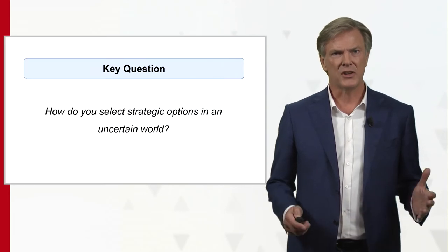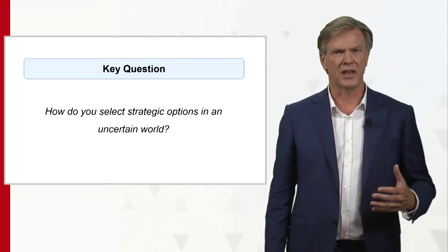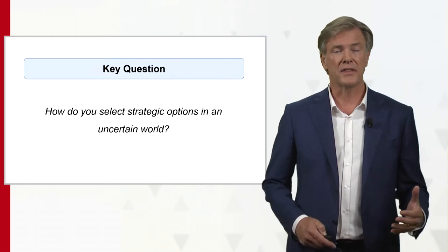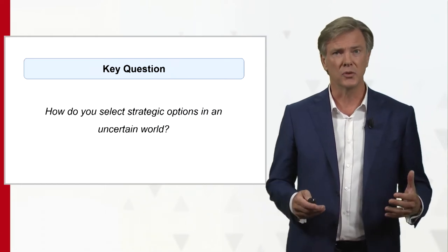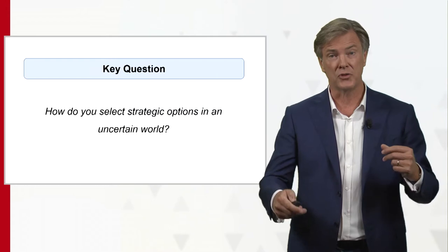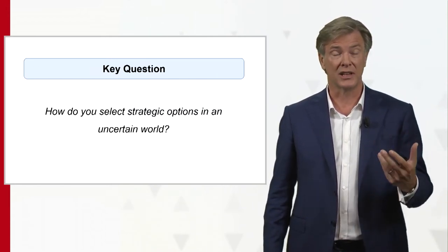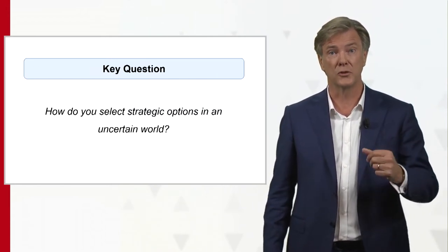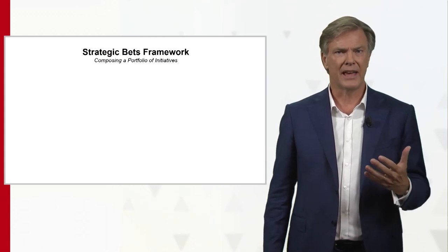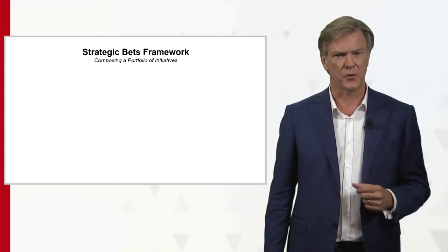The key question is: how do you select strategic options in an uncertain world? There are a lot of things that you could do. We don't really know what's going to happen in the future, and still we need to move ahead and select what to do. For that, we've developed a framework called the strategic bets framework.